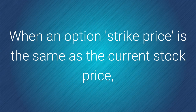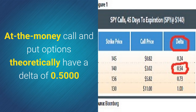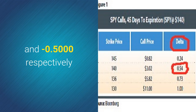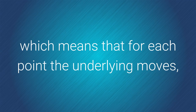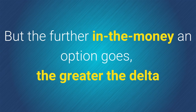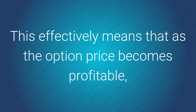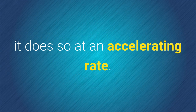When an option's strike price is the same as the current stock price, it is called at the money. At the money call and put options theoretically have a delta of 0.5 and negative 0.5 respectively, which means that for each point the underlying moves, the option price will initially move at half the same rate. But the further in the money an option goes, the greater the delta, up to a maximum of one. This effectively means that as the option price becomes profitable, it does so at an accelerating rate.